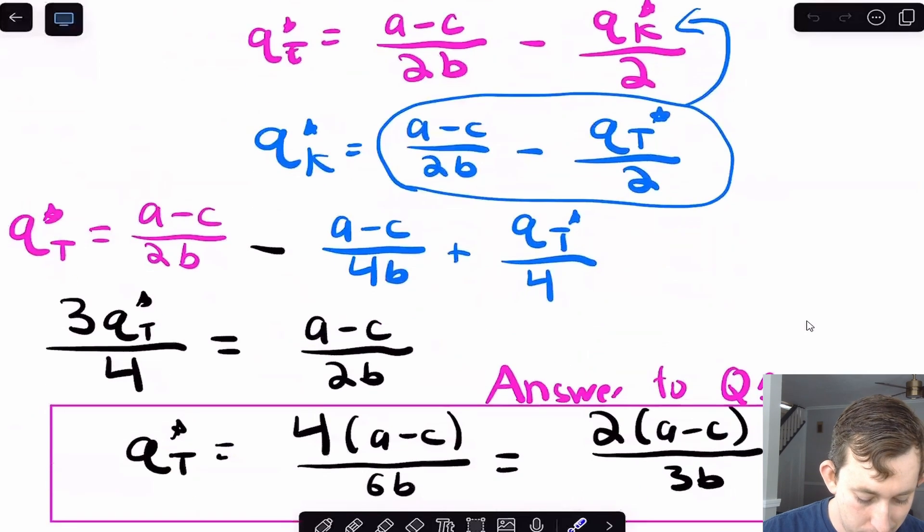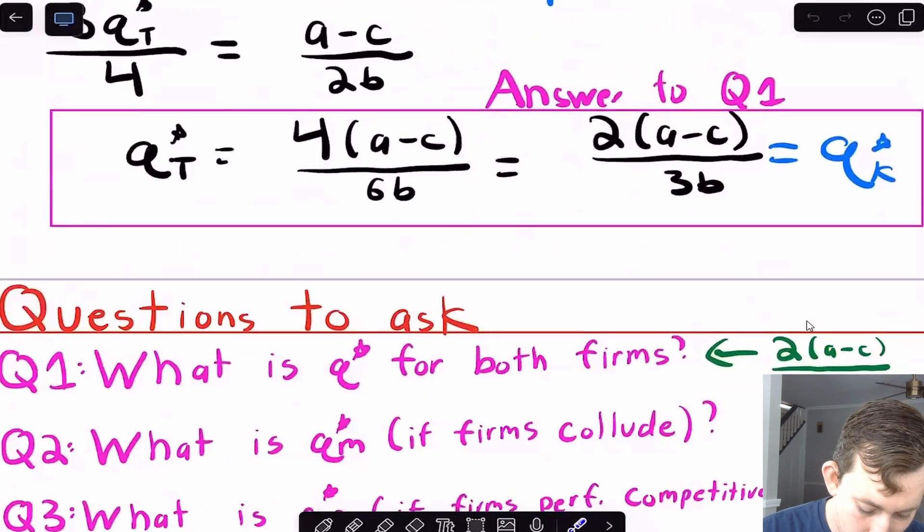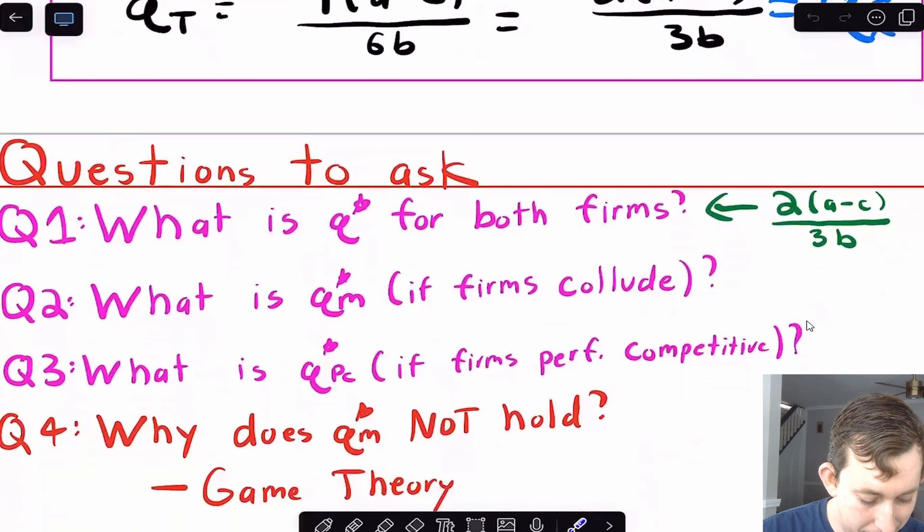So let's just do that real quick. And what you're going to see is if I go through all this math, take a second, make sure it makes sense to you. If not, put that in the comments below. And what you're going to see is I'm going to get that qt star or Tina's optimal quantity, it's going to be the same as Kristen's optimal quantity, that's going to be two times a minus c over 3b. So again, if anything in the math tripped you up, or you think I made a mistake somewhere, comment below. Also, if this is helpful, please leave a comment as well. Super helpful. But now we've got an answer to question one.